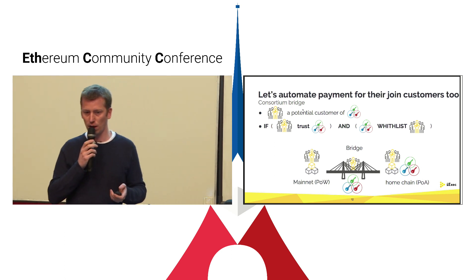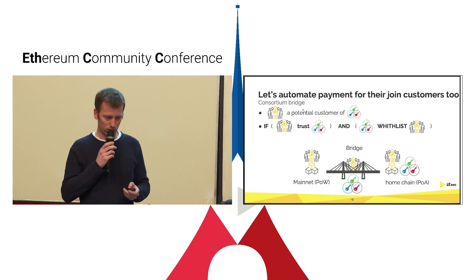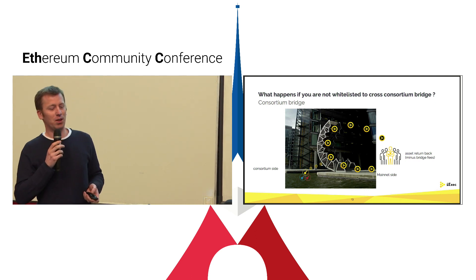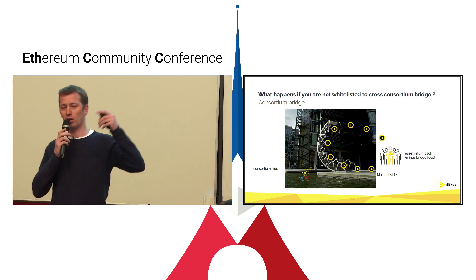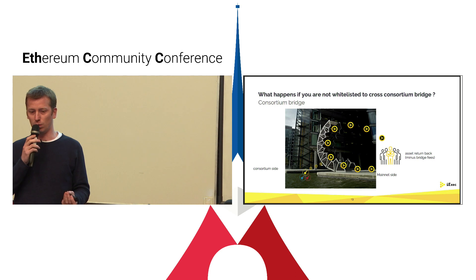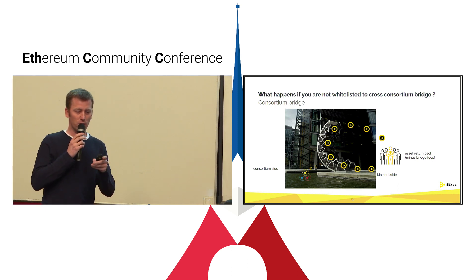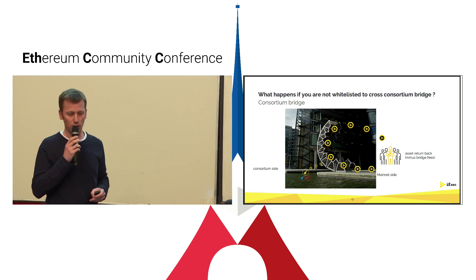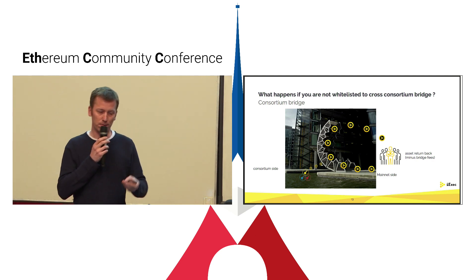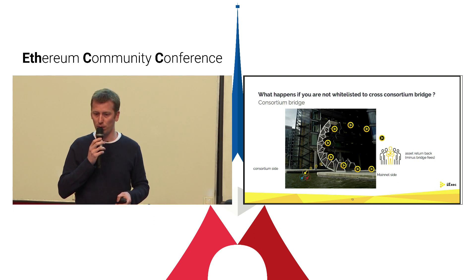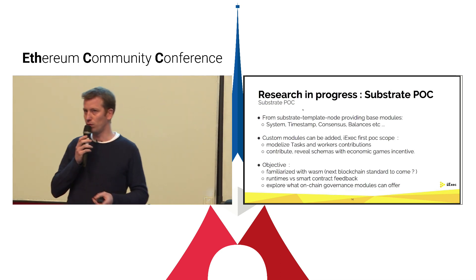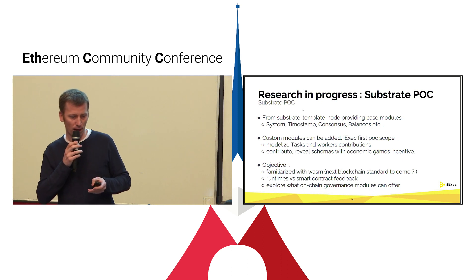What happens if you are not whitelisted to cross the bridge? Since we cannot block ERC20 transfers, the bridge has to refund the user — the asset is given back. Today, bridge smart contracts can also add fees, so in that case only fees would be removed from the transfer. That covers the bridge part of what we are currently working on. Now I will present what we experimented with in substrate.